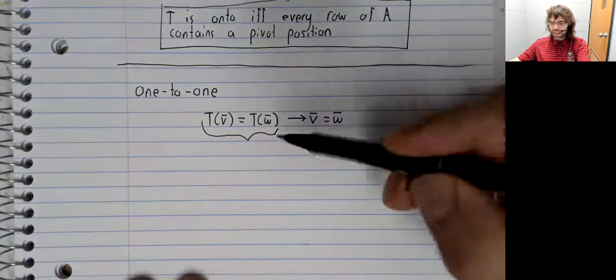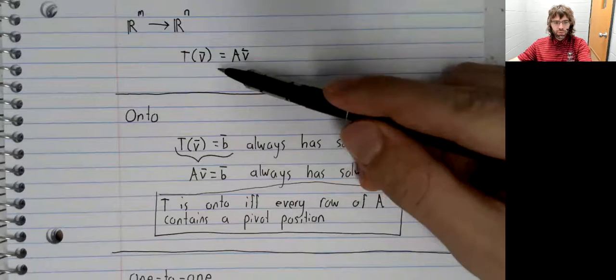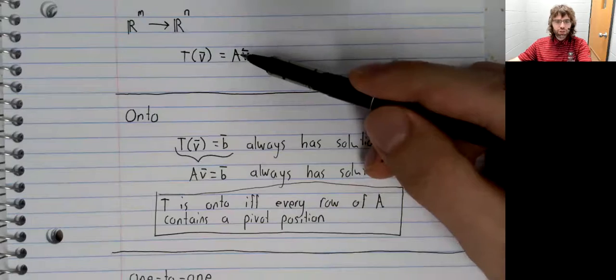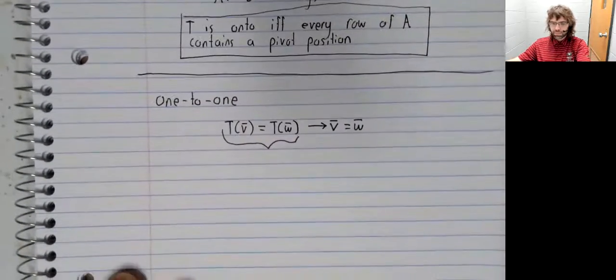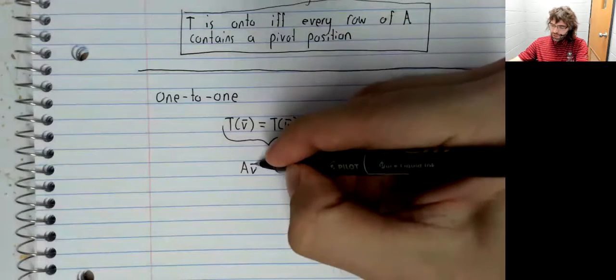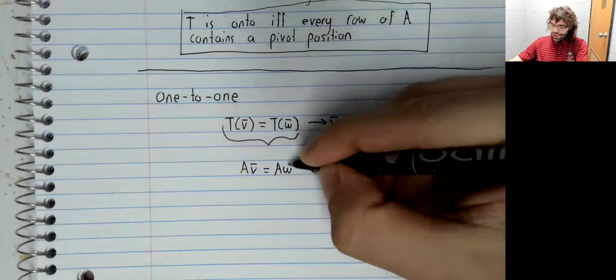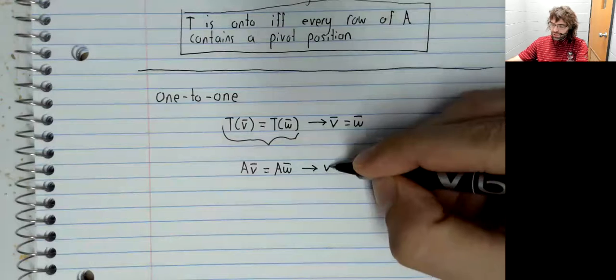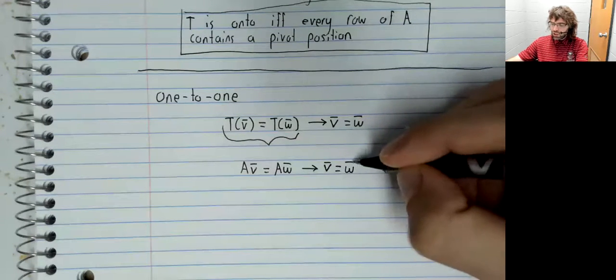So recasting this statement in terms of what we've said T is, it's a linear transformation of this form: AV equals AW implies that V equals W.